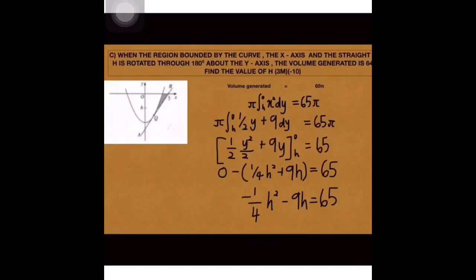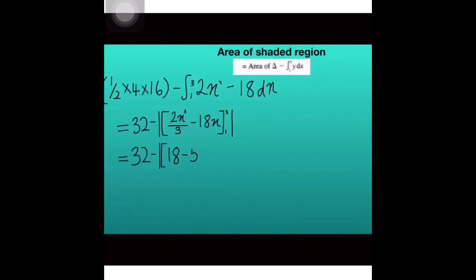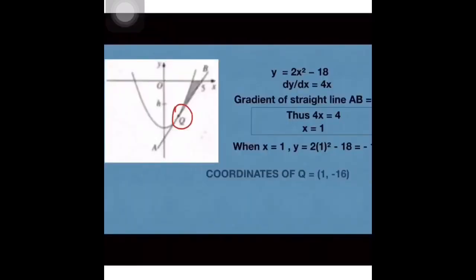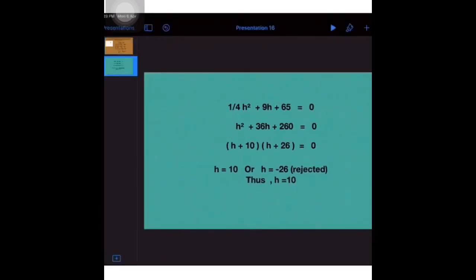Kita dapat quadratic equation. Lepas tu macam mana nak solve kan ni? Boleh pakai calculator je. Dapat H tambah 10 H tambah 26. Sebenarnya H bersamaan negatif 10. Lagi sekali, typo, maafkan dia. Lepas tu kenapa H negatif 26 ni rejected? Kita tengok balik equation tadi. Y intercept dia dekat negative 18. Negatif 26 tu dah confirm out sebab dia kat bawah. H bersamaan negatif 10. Tu je jawapan yang kita boleh ambil. Dah siap, senang tu kan?